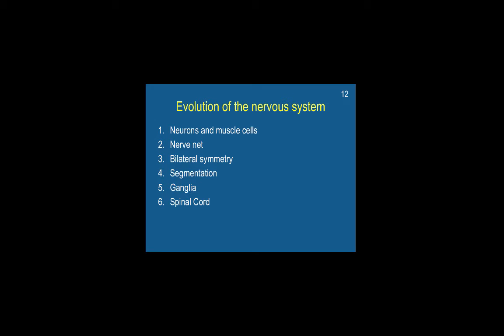The spinal cord has all of the above — it is segmented, it has ganglia, it has symmetry elements to it. And finally, the brain is the most evolutionarily recent development across these stages: very early neurons, muscles, nerve net, segmentation, ganglia, spinal cord. The brain is the peak of that evolution.